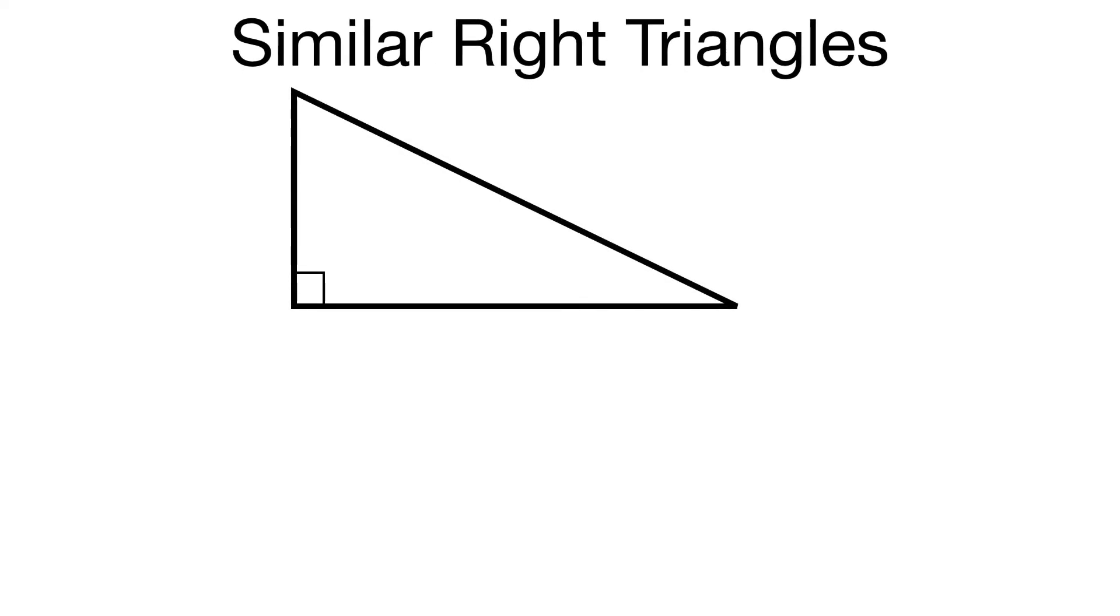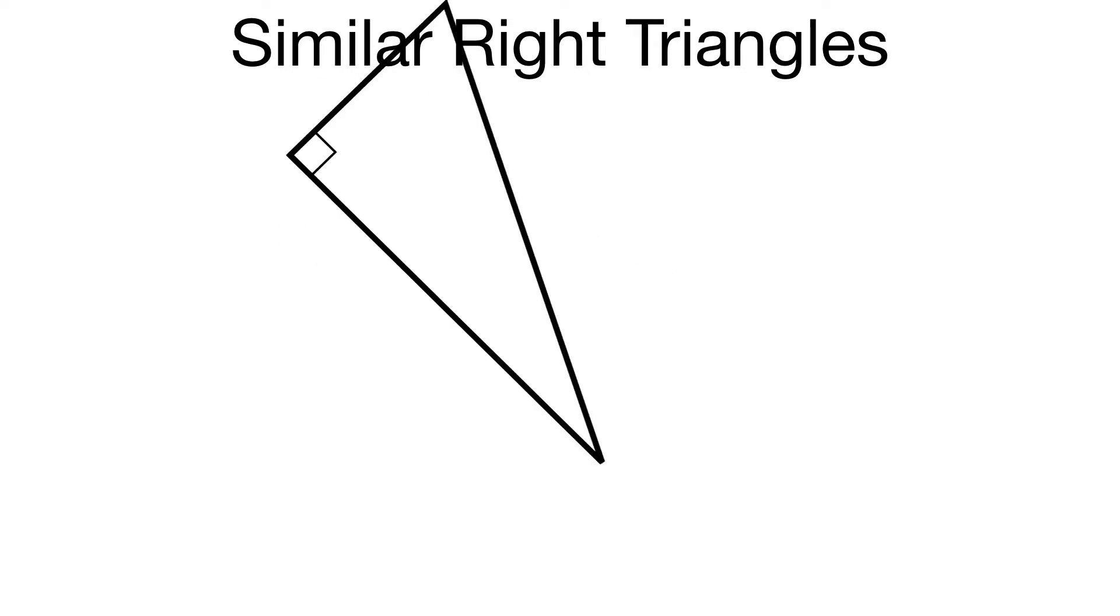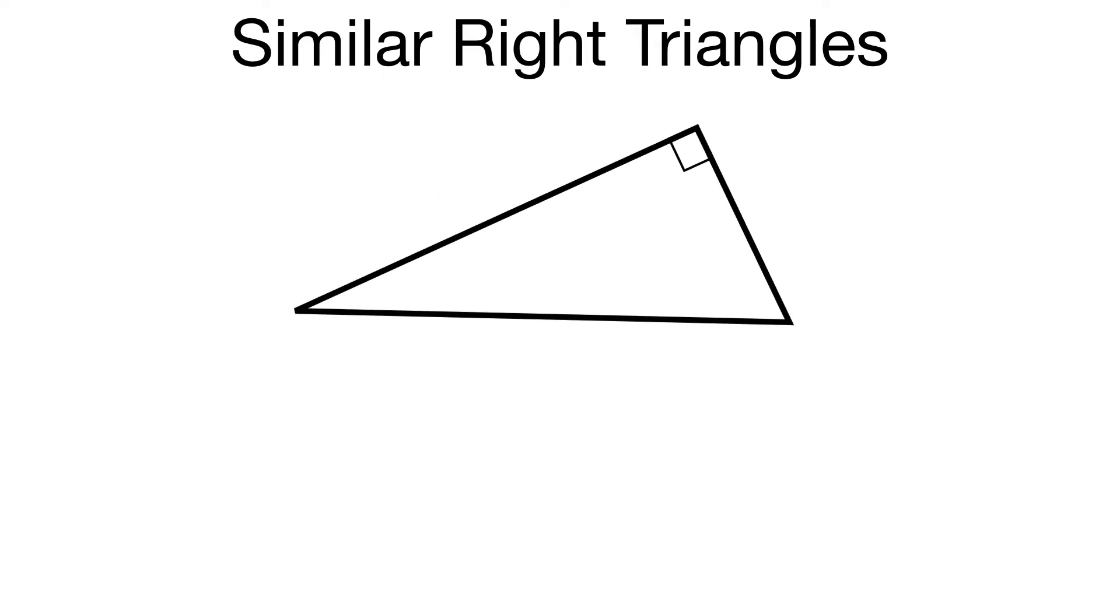We start with our right triangle and I want to drop an altitude from the right angle. I'm going to turn it upside down so we can see that altitude dropping to the hypotenuse side. Altitudes make right angles, they're perpendicular, and we form three similar right triangles.